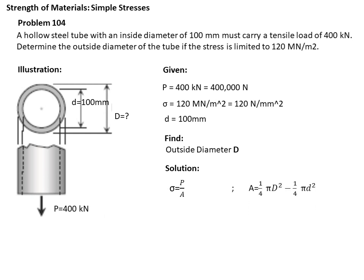So from direct substitution: stress equals force divided by area. The area is pi over 4 times the outside diameter squared minus pi over 4 times the inside diameter squared. So we will get the cross-sectional area.